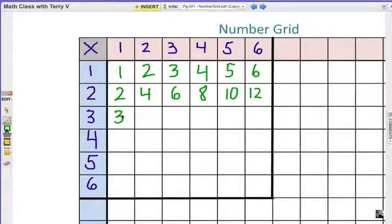Multiples of three. You say it out loud. Three, six, nine, twelve, fifteen, eighteen. Very good.